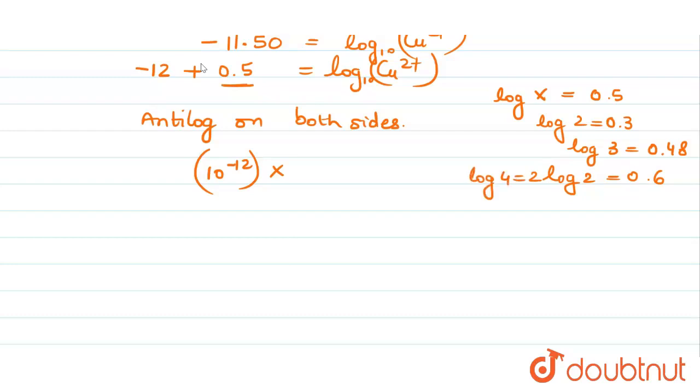So now how do we write what is 0.5? 0.5 is somewhere over here, so we can write this as 3 in the place of 0.48 log 3, which equals concentration of Cu2+. So 3 × 10⁻¹² equals concentration of Cu2+ in molarity.